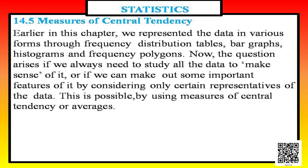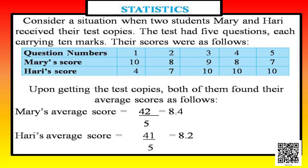Let us start with a situation. Consider when two students, Mary and Hari, received their test copies. The test had five questions, each carrying ten marks. Let us look at the table. In the first row we have the question numbers one, two, three, four, five. In the second row we have the marks Mary scored — in question one she got ten, in question two she got eight, in question three nine.